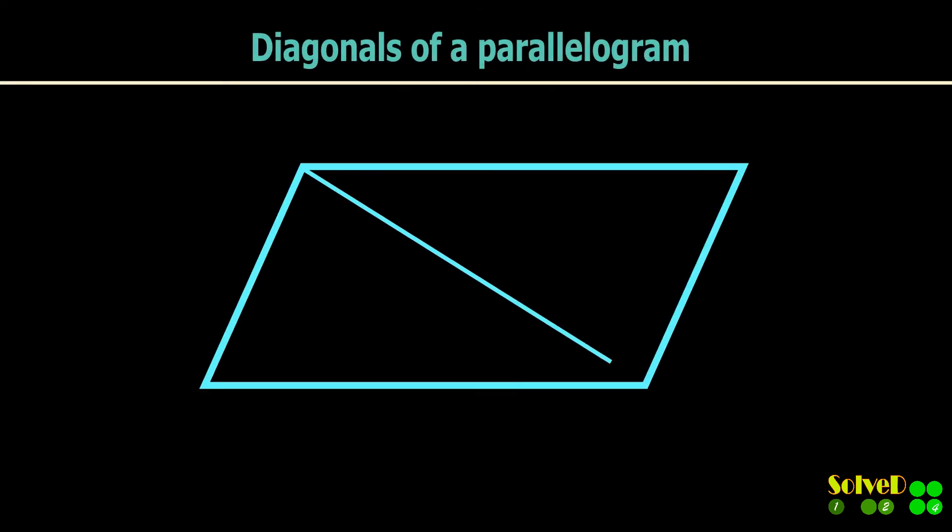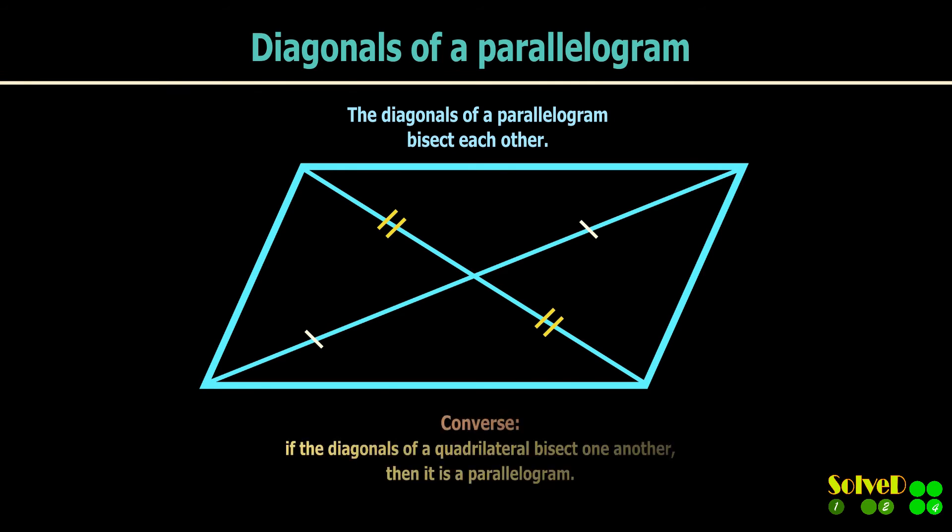The diagonals of a parallelogram bisect each other; that is, each diagonal cuts the other into two equal parts. Conversely, if the diagonals of a quadrilateral bisect one another, then it is a parallelogram.